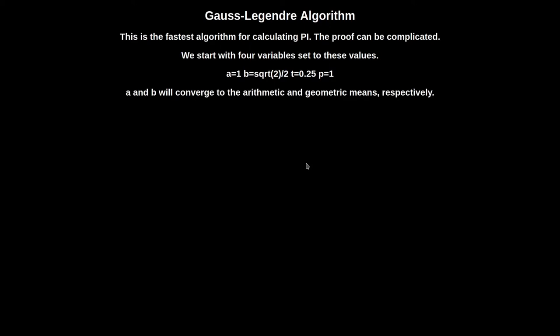I don't know why it's T and P. And A and B will converge to the AM and GM, and T and P will help out. And T will become this value, and P will just double every iteration. Okay, so then, pi will be A plus B, the quantity squared, over 4T, 4T being in the denominator.